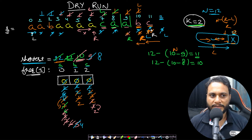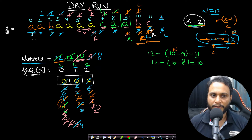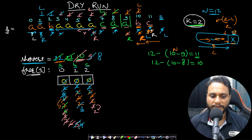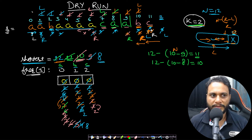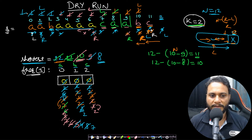Removing another character causes b's frequency to drop to 1. The R pointer moves left past four a's and one b to recover, stopping at index 1. Window size = 12 − 0 = 12, no update. Continuing left: sizes are 11 then 10, both worse than 8. When L goes below 0 we stop. The final answer is 8.